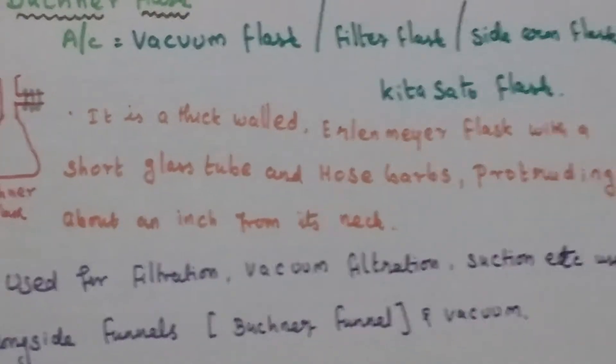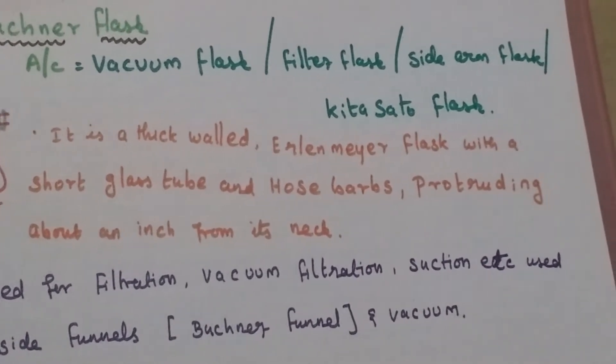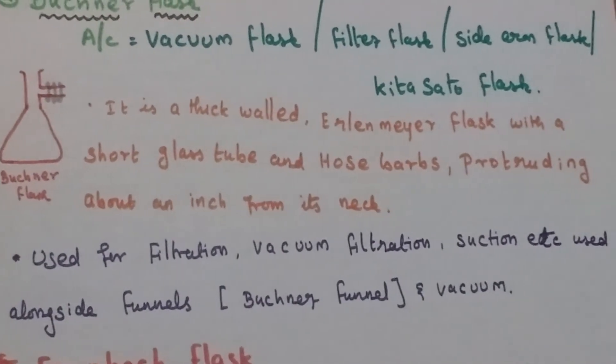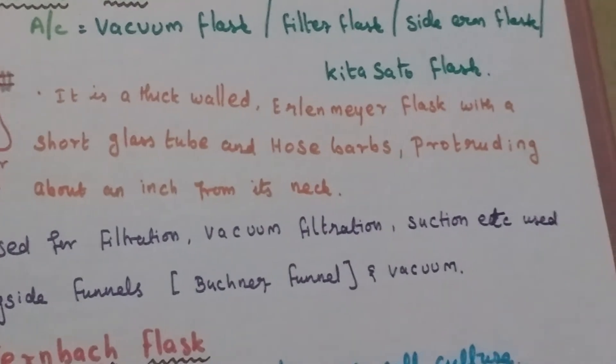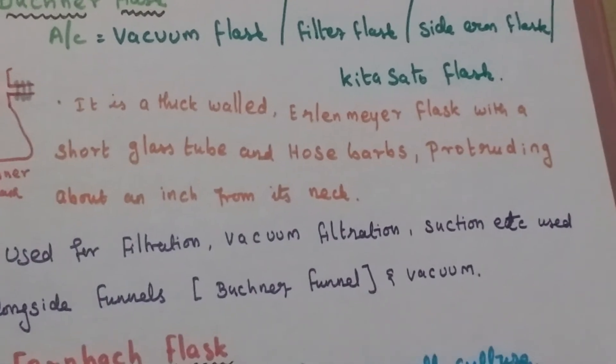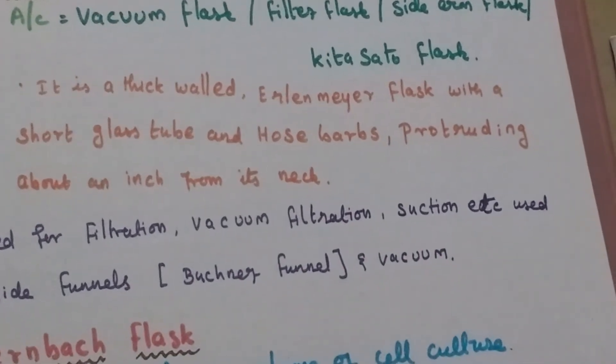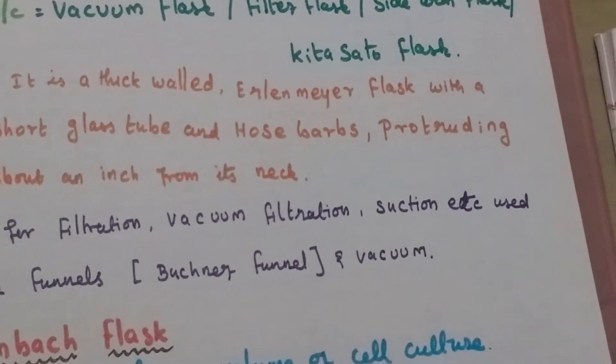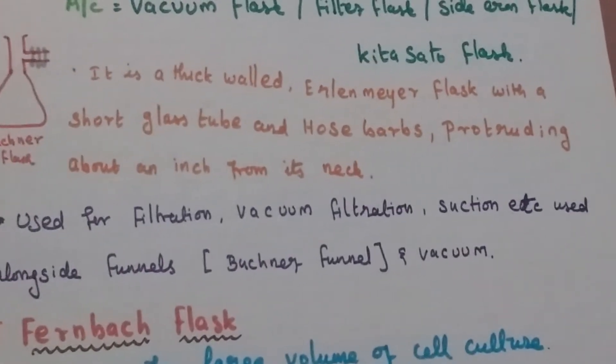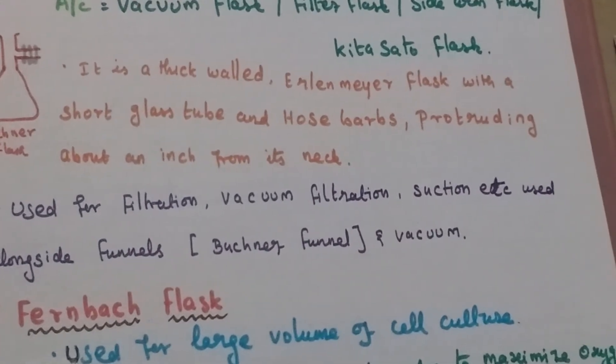Fourth is the Buchner flask, also called a vacuum flask, filter flask, side-arm flask, or Kitasato flask. This is a thick-walled Erlenmeyer flask with a hose barb. A hose barb is a cylindrical piece for attaching and securing hoses, used in machines for filtration and chemistry laboratories. It is used for filtration, vacuum filtration, suction, etc.